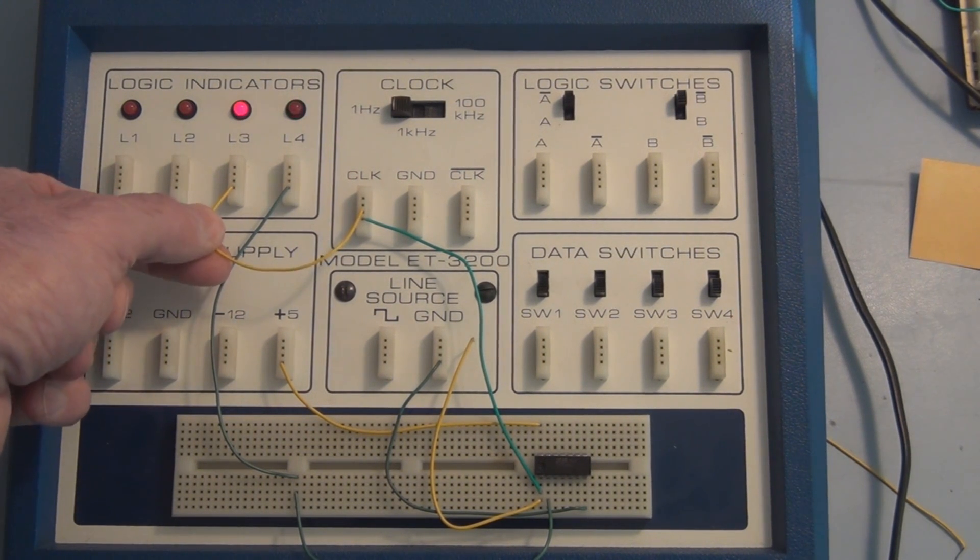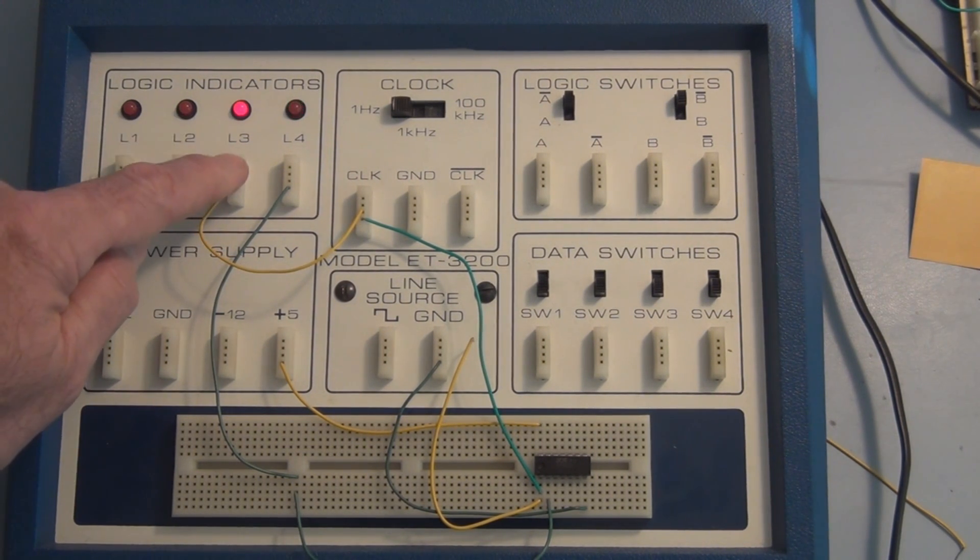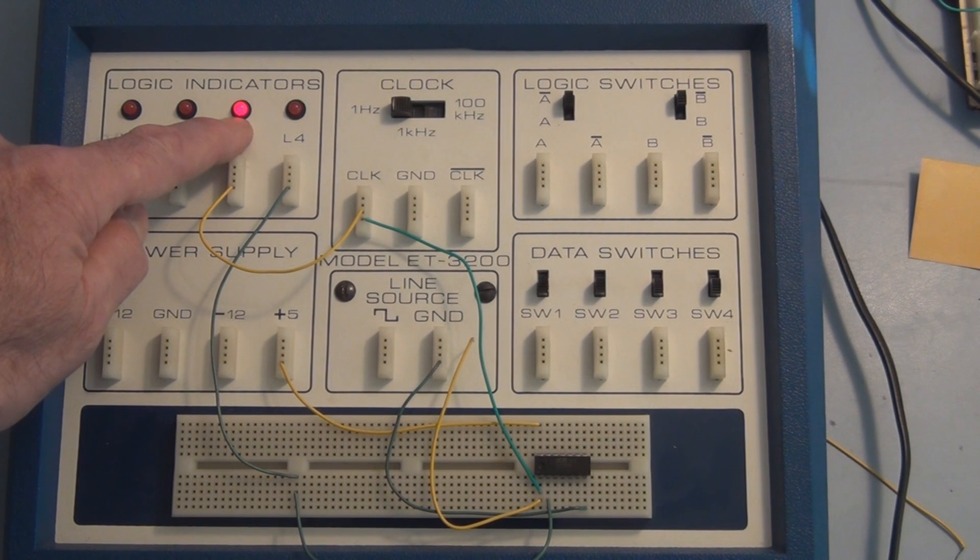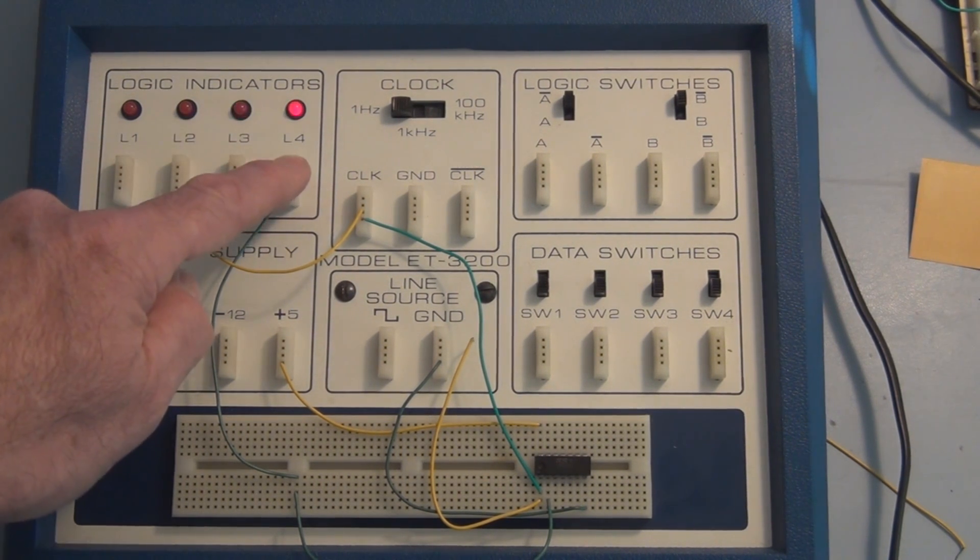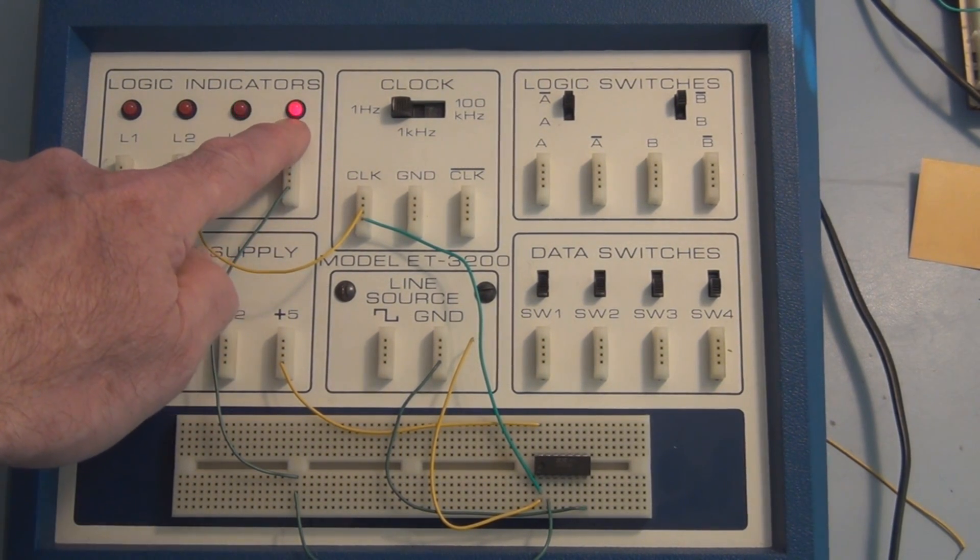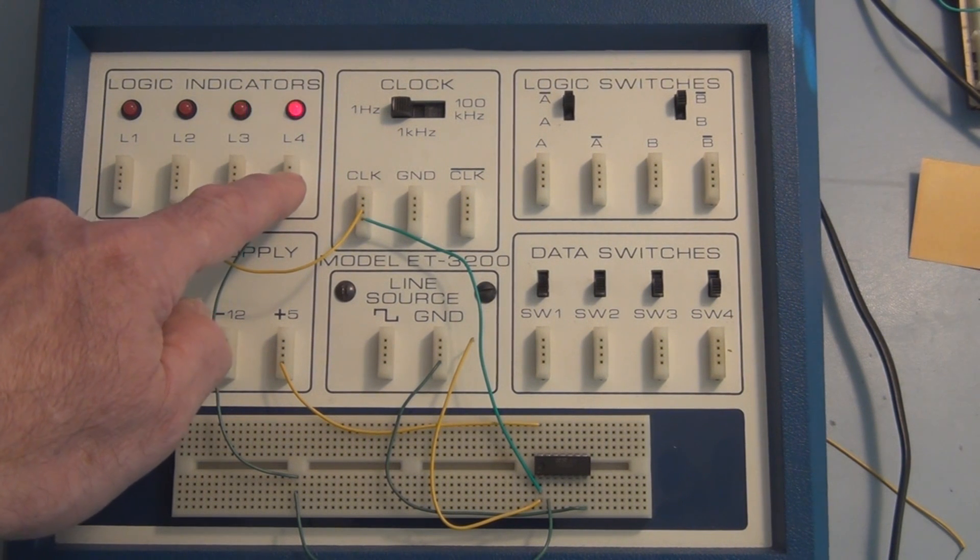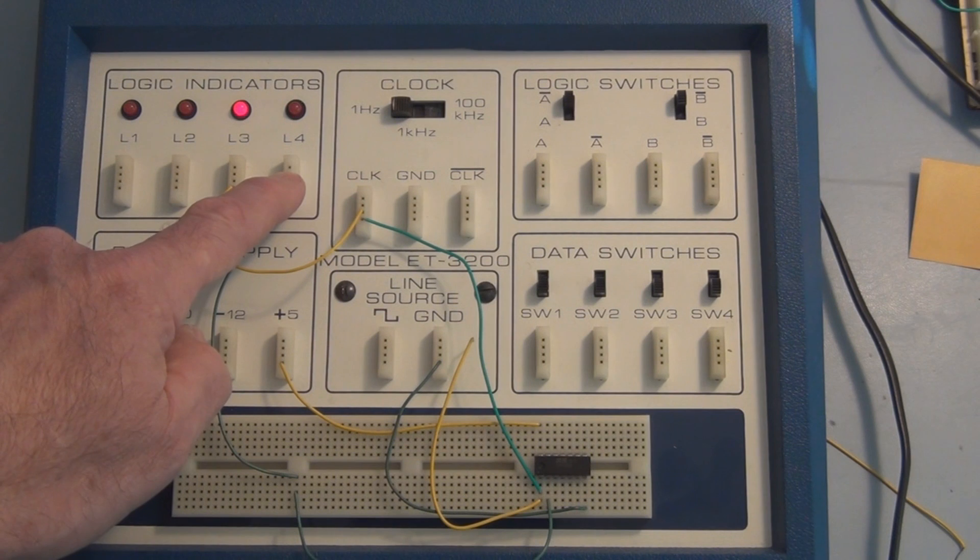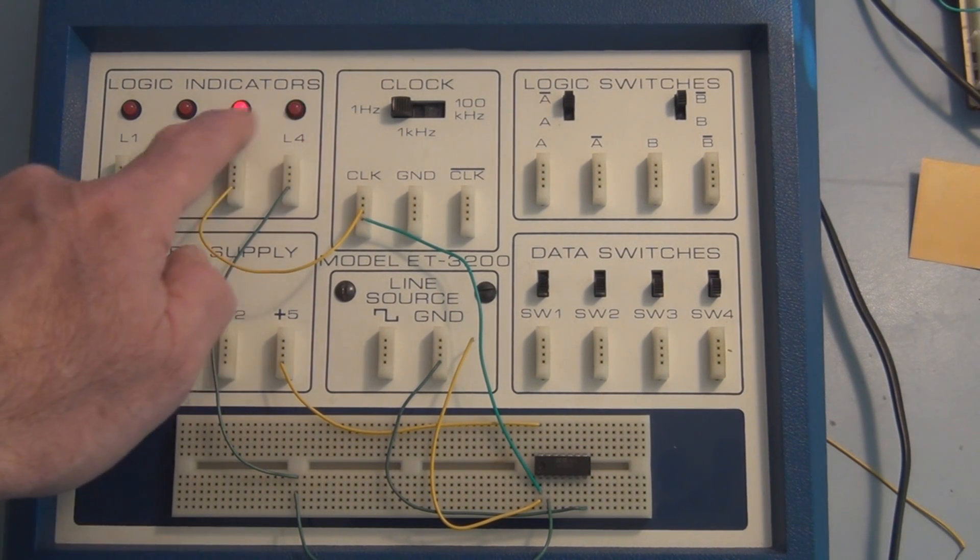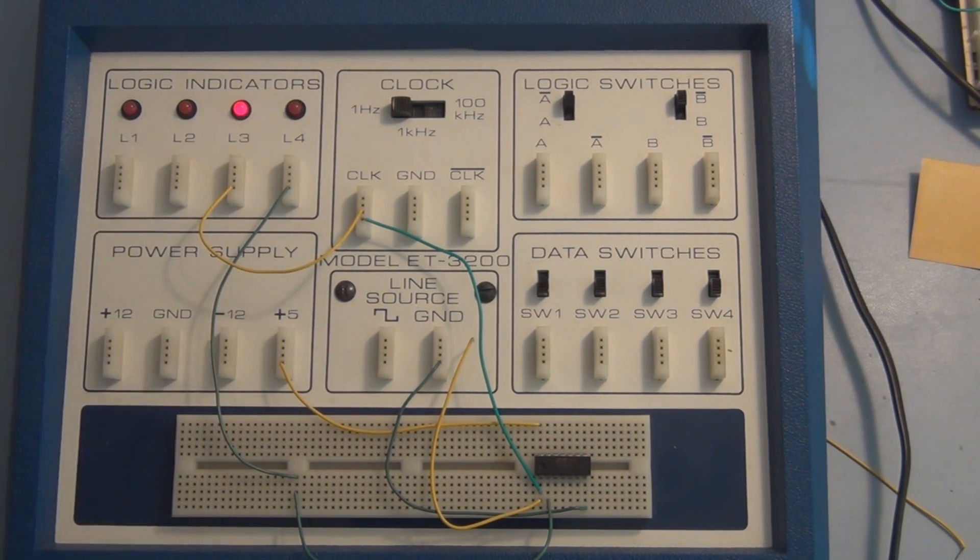So here you can see the result of having the clock signal go through an inverter. Here is the original clock signal going straight to L3, this LED. And L4 is the clock signal after it's passed through the inverter.